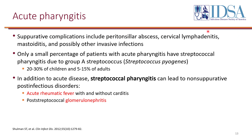These IDSA guidelines are specifically for group A streptococcus, specifically Streptococcus pyogenes. Overall, only a small percentage of patients with pharyngitis have group A strep pharyngitis — about 5 to 15% in adults, and more so in children. This is important because strep pharyngitis can lead to acute rheumatic fever, especially in children, and also to post-streptococcal glomerulonephritis. Therefore, treatment of strep throat is important.